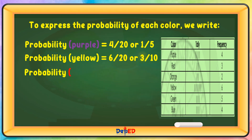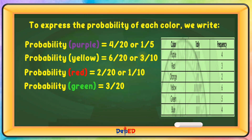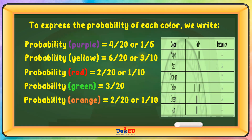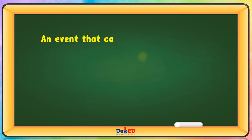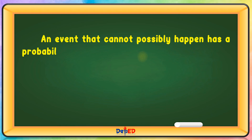Probability of red equals 2 over 20, or 1 tenth. Probability of green equals 3 over 20. Probability of blue equals 3 over 20. Probability of brown equals 0, or impossible to happen.